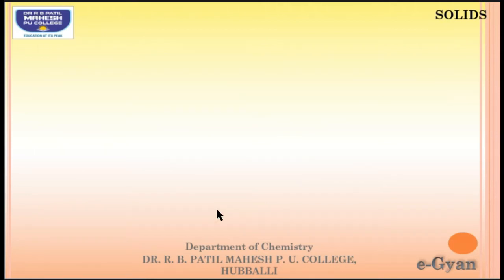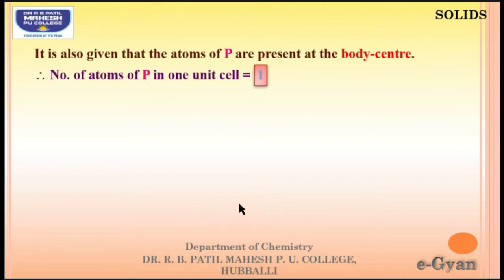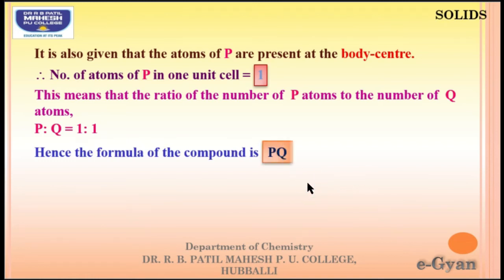For P, which is present at the body center, the number of atoms = 1 and contribution is also 1. Hence the answer is 1. The ratio of P to Q is 1:1, so the formula is P¹Q¹, that is PQ.